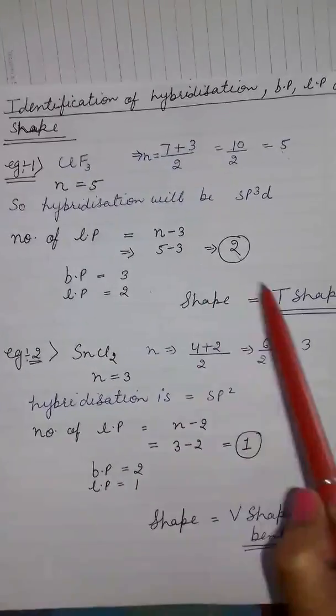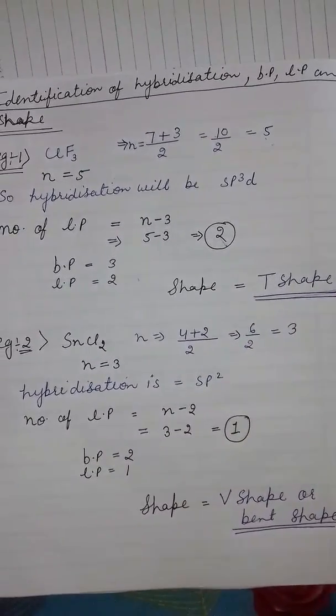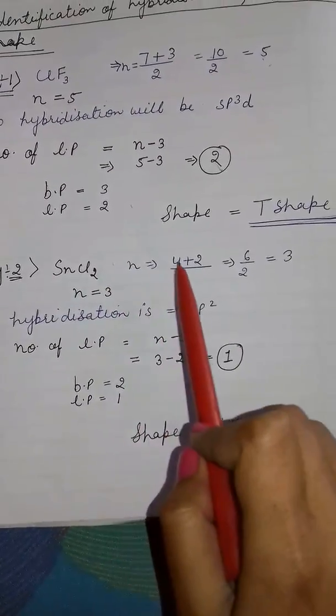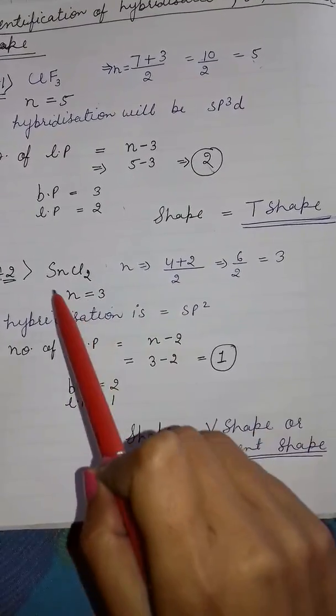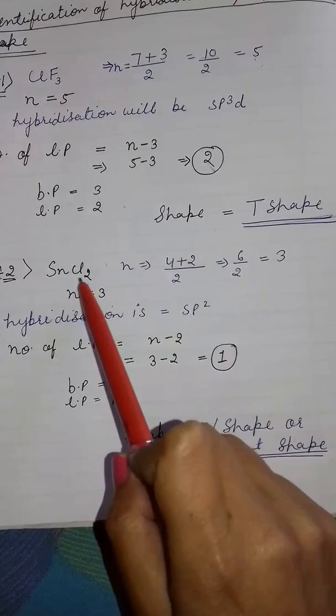So shape will be T-shape, as I already explained. Another example is SnCl2. Here, n equals the number of valence electrons of tin, which is 4, and number of univalent atoms is 2 upon 2 equals 6 upon 2. So the value of n equals 3.